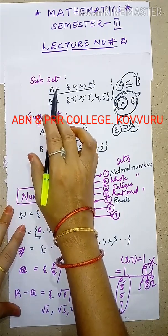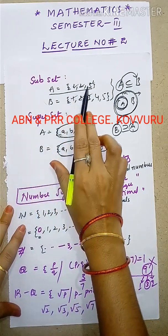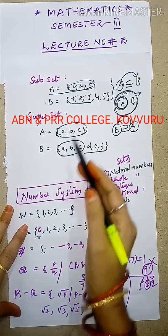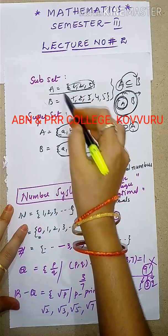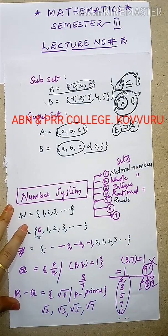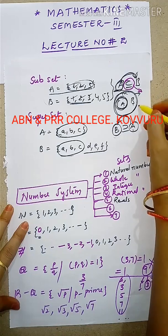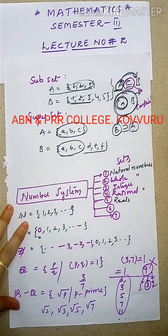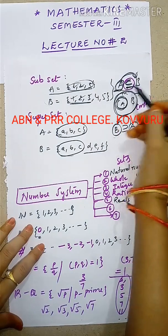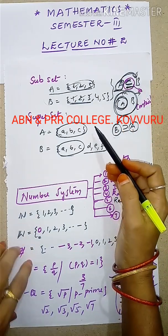For a subset example: set A has elements 1 to 3, set B has elements 1 to 5. All elements of A are also elements of B, so A is a subset of B — that is, A is contained in B, entirely contained in B.